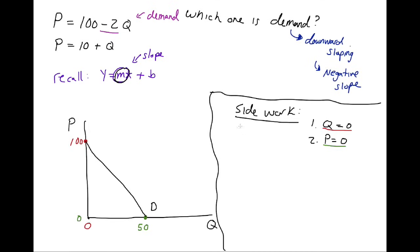Now that we have the demand curve, let's work on the supply curve. So we go back over to the side work. We know that our supply curve is P equals 10 plus Q.